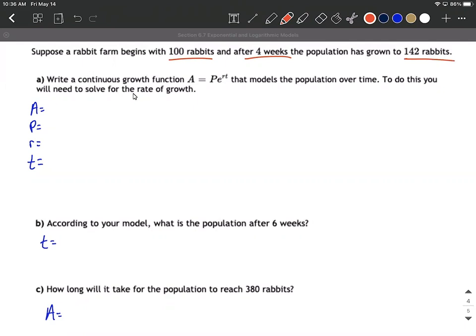All right. We want to write a continuous, big keyword continuous, growth function A equals P times e raised to rt that models this population over time. To do this you need to solve for the rate of growth.